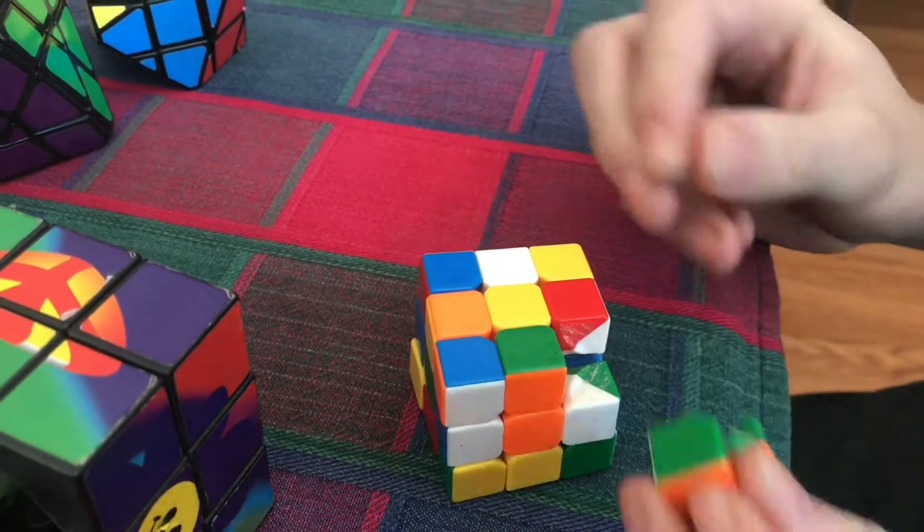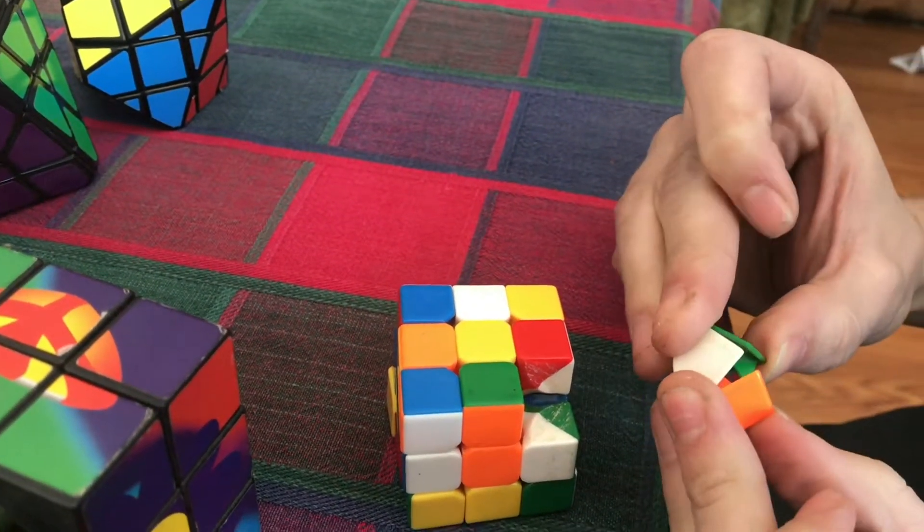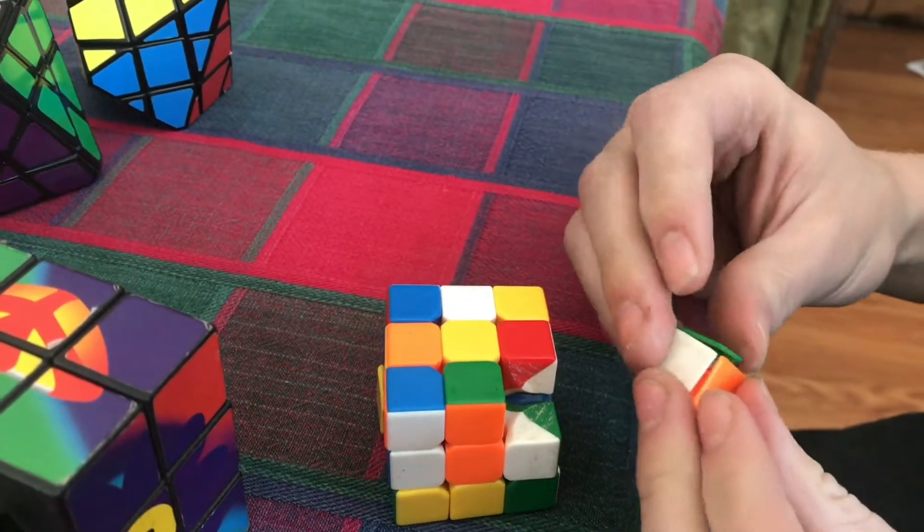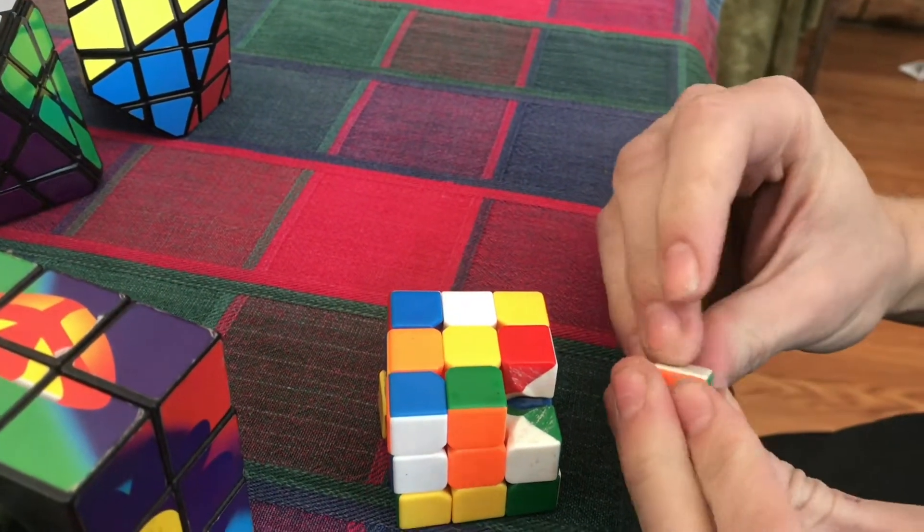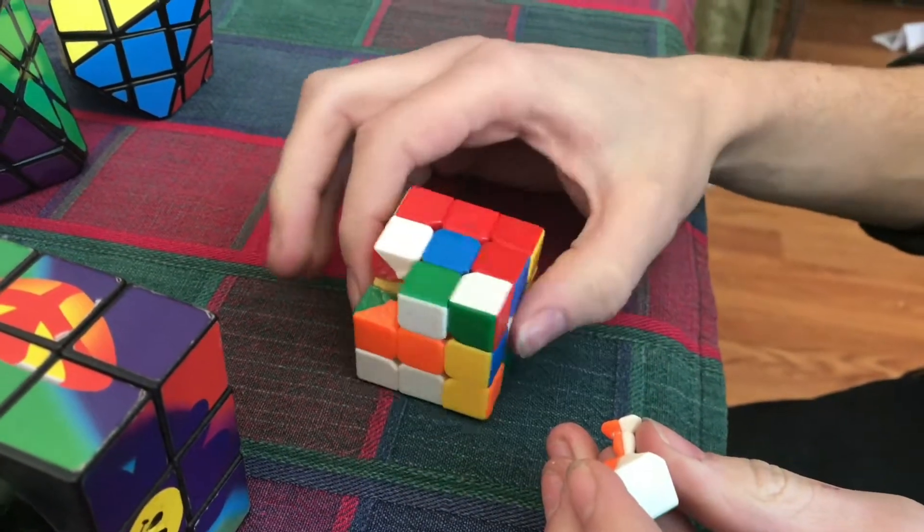And actually, because this is a stickerless cube, I can take apart these corner and edge pieces and I can really reorient the cube so that different sides are opposite each other.